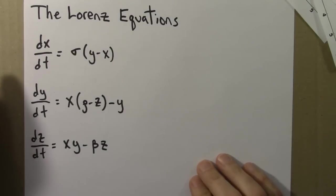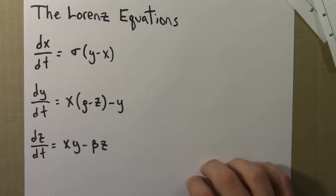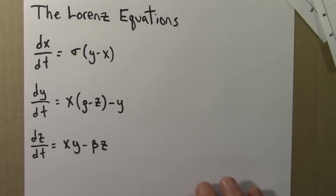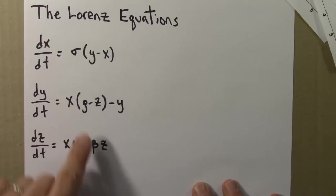The Lorenz equations are three differential equations, a three-dimensional system of differential equations. They were introduced in the early 1960s by Ed Lorenz, an MIT meteorologist. And he proposed these as a very simplified model of convection in the atmosphere. So he started with more complex models and stripped things away until he got these three. These equations have three parameters and the parameters are Greek letters: sigma, rho, and beta.